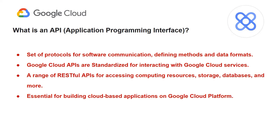In the context of Google Cloud, APIs are a standardized way for developers to interact with Google Cloud services and integrate them into their applications. Google Cloud offers a wide range of RESTful APIs that enable developers to access and utilize various services such as cloud computing resources, storage, databases, and machine learning applications, without having to manage the underlying infrastructure. These APIs provide programmatic access to functionalities like creating virtual machines, managing storage buckets, processing images with machine learning APIs, and analyzing data with BigQuery, making them essential for building a variety of cloud-based applications on Google Cloud Platform.